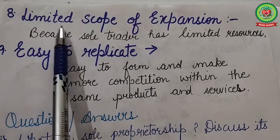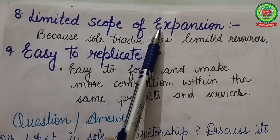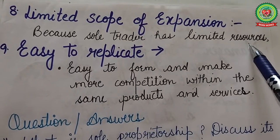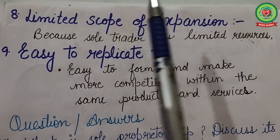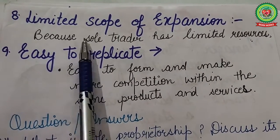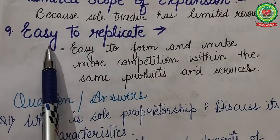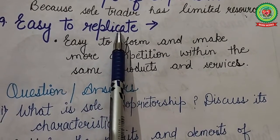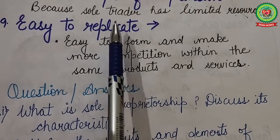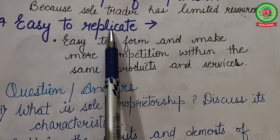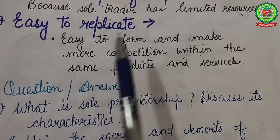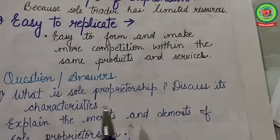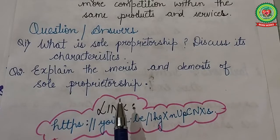Next is limited scope of expansion — since the sole trader has limited resources like management ability and capital, he can expand his business only up to a certain limit. Next is easy to replicate — sole proprietorship, being the simplest business model, can be easily replicated because it is easy to form, leading to more competition with the same products and services.